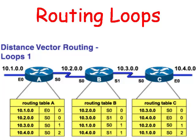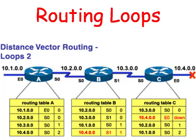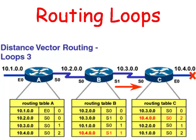Suppose Router C's connection to the 10.4 network was to fail. Router C would look for another connection to the 10.4 network. If we did not have techniques to prevent routing loops, what might happen is Router B might advertise to Router C that it has a connection to the 10.4 network which is only one hop away, not realizing that this information came from C originally.